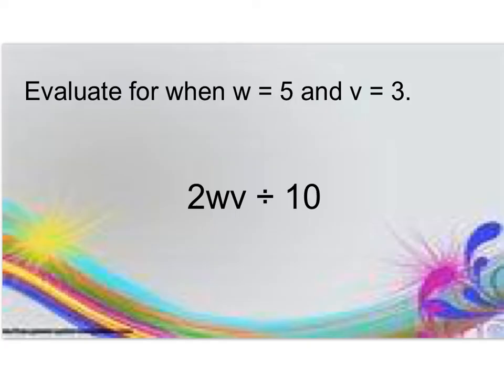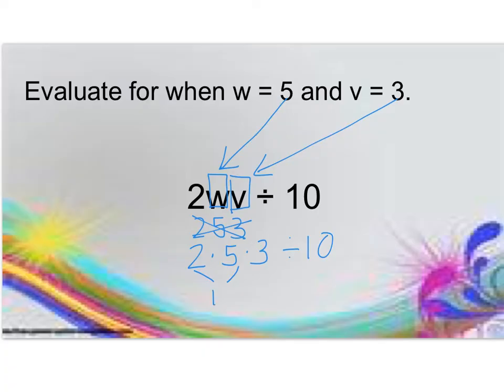Try this one on your own and come back for checking. W is 5 and v is 3. Don't make the mistake of saying this is 253. Remember it's 2 times 5 times 3. If I don't see an operator between letters and numbers, it always means multiply. Divide it by 10. Using order of operations: 2 times 5 is 10, 10 times 3 is 30, and 30 divided by 10 is 3.